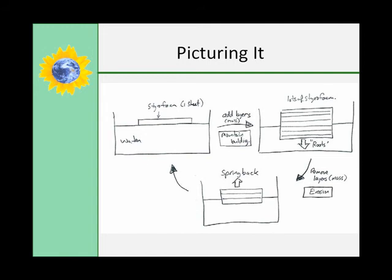That rebound is called isostasy. The more the rebound, the deeper the rocks that become exposed at the surface of the earth — those rocks 20 kilometers down were probably from a very large mountain chain that has now popped back out. Once the roots have gone, isostasy can no longer continue, and the mountains are finally reduced to flat peneplains. The process takes about 500 million years to complete.